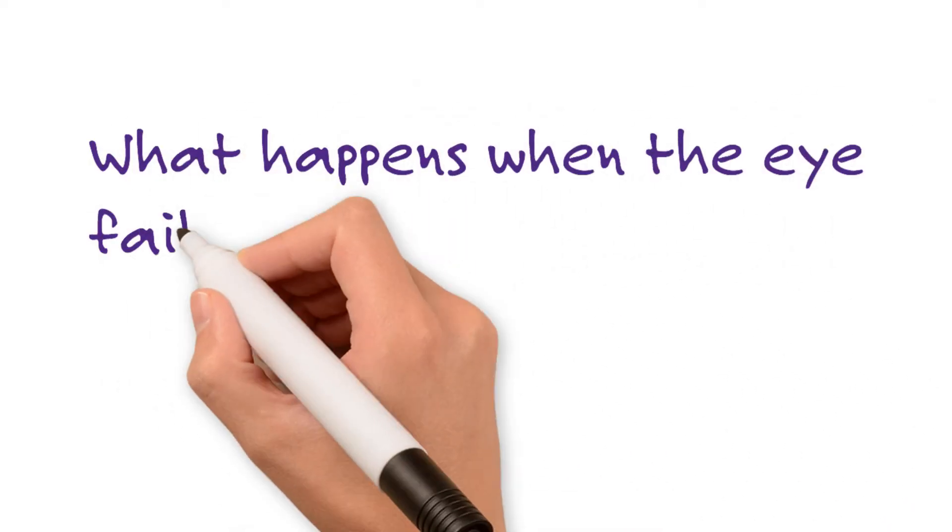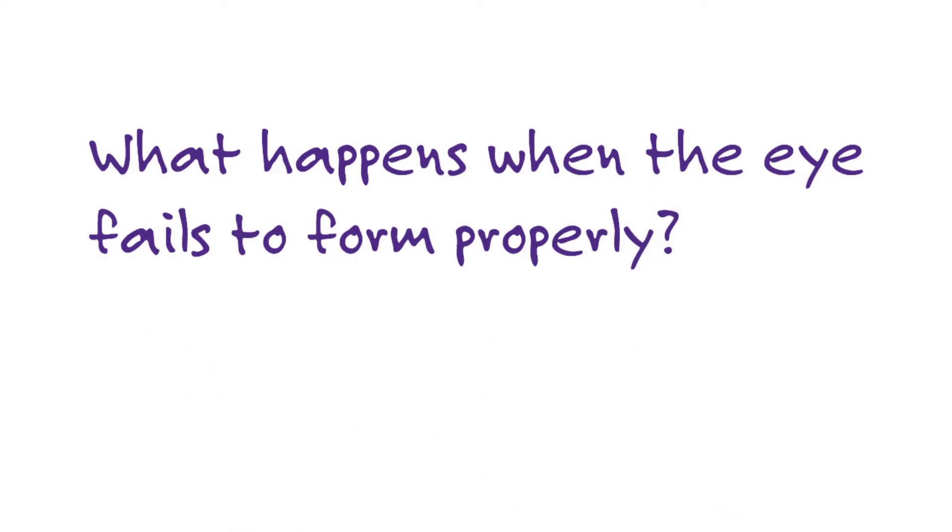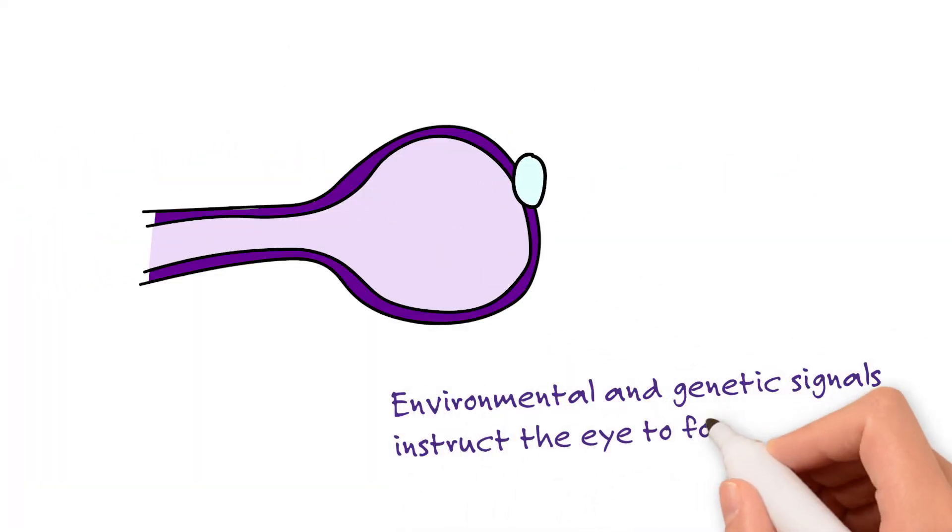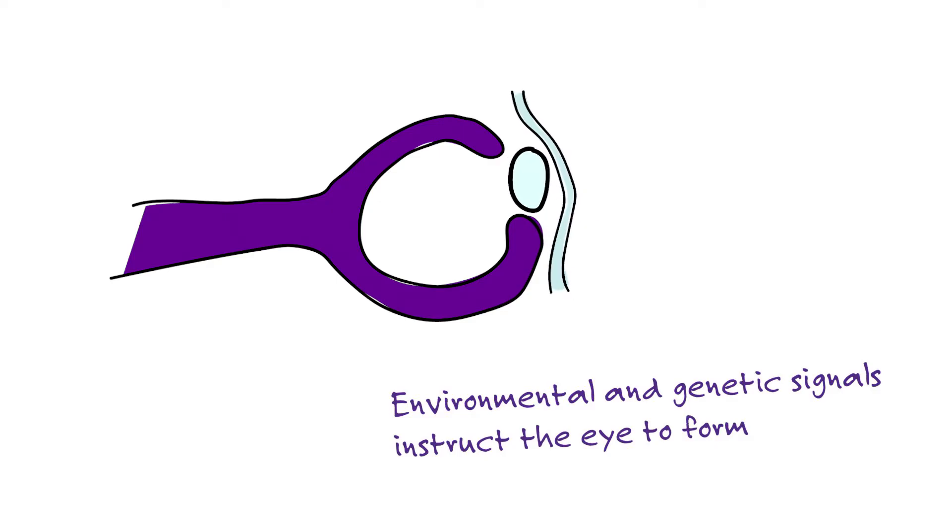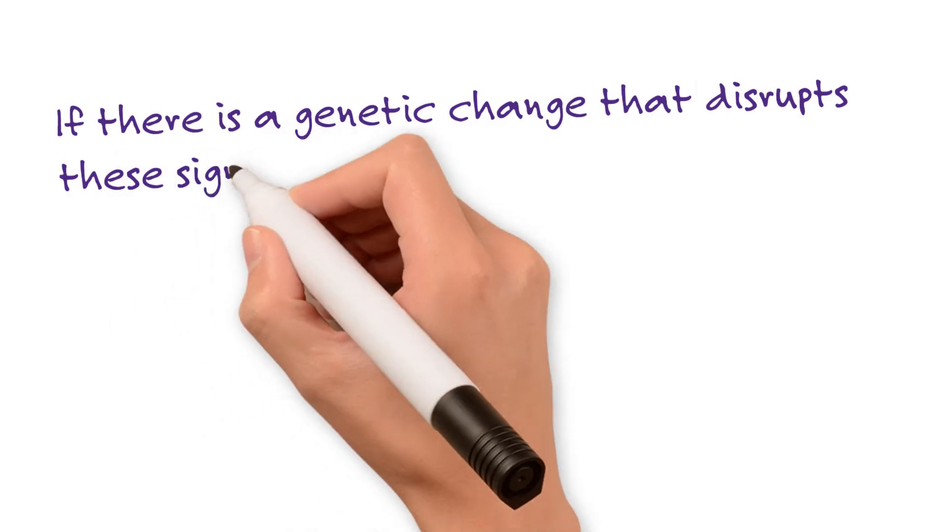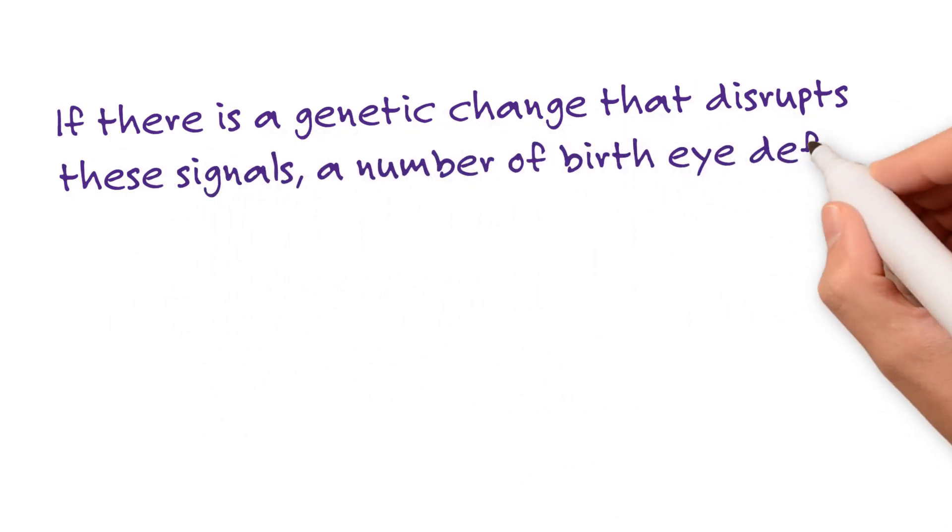What happens when the eye fails to form properly? Environmental and genetic signals instruct the eye to form. If there is a genetic change that disrupts these signals, a number of birth eye defects can arise.